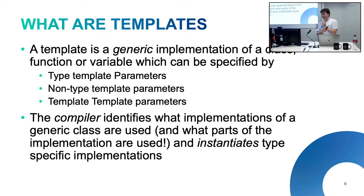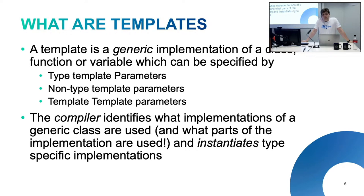We're going to be talking about the first two primarily for this talk. The important part is that the compiler is the thing that identifies what implementations of a generic class are actually used. For that template power function, until we say call template power of 2 to the 5, we don't do anything with it at all. And then once we do, the compiler goes and looks at it, instantiates only what we want, and generates type-specific implementations.